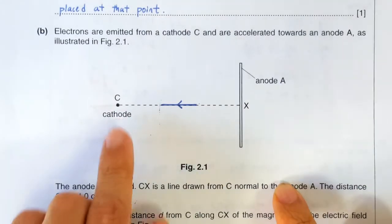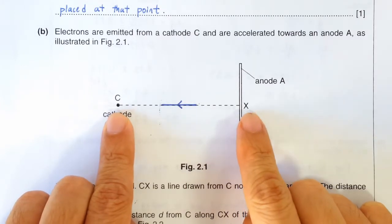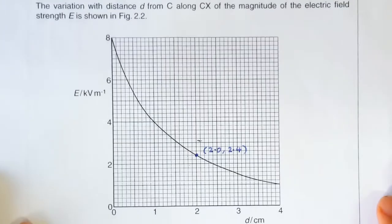Okay, in this question we calculated the potential difference between point C and point X. So why is this calculated value an underestimate?